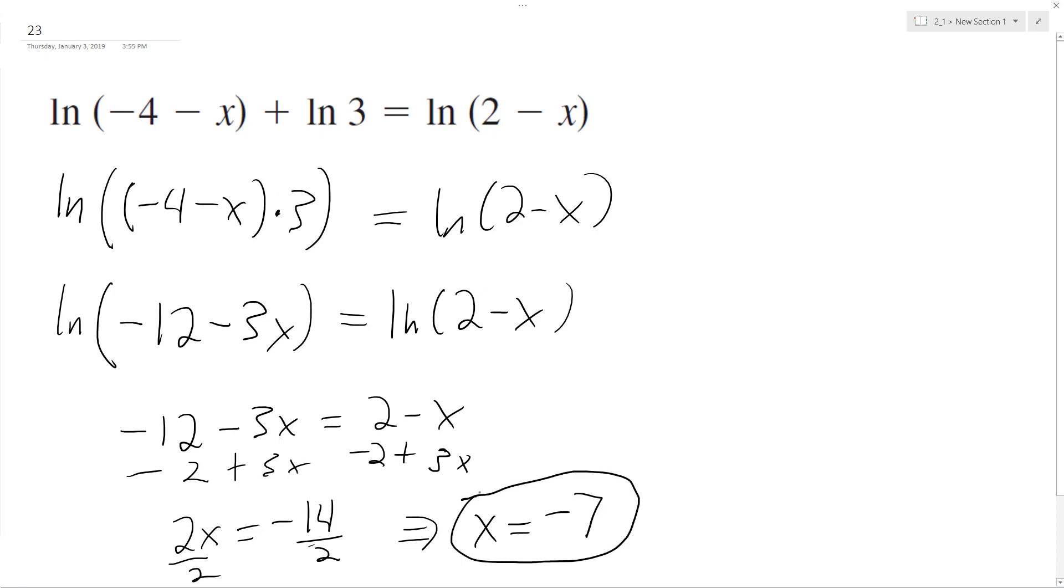Let's just test that really quick. So to do that, we'll plug in negative 7. So it ends up being plus 7. This ends up being 3, 3 times 3, so it's natural log of 9 equals natural log of 9.